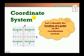Coordinate system: x-axis, y-axis, origin, quadrant 1, quadrant 2, quadrant 3, and quadrant 4. Each point on the coordinate system can be represented by an ordered pair.